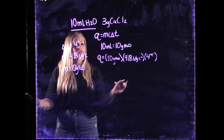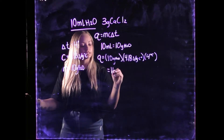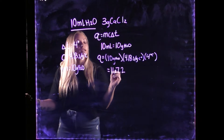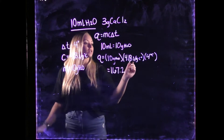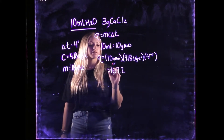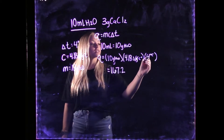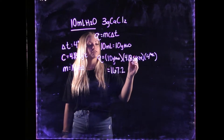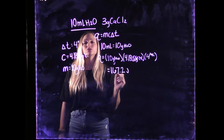We multiply through and get 167.2. The grams cancel out and the degrees Celsius cancel out, leaving us with joules. So this is 167.2 joules.